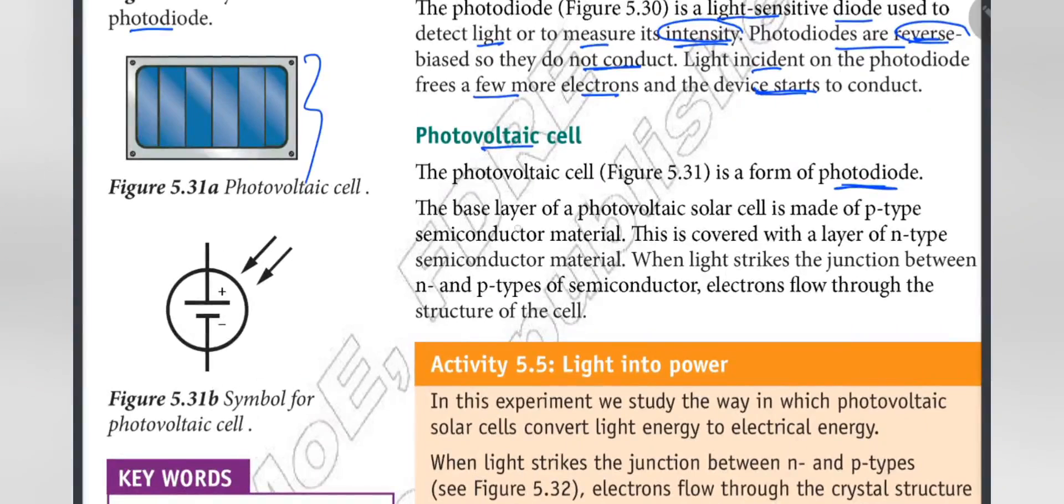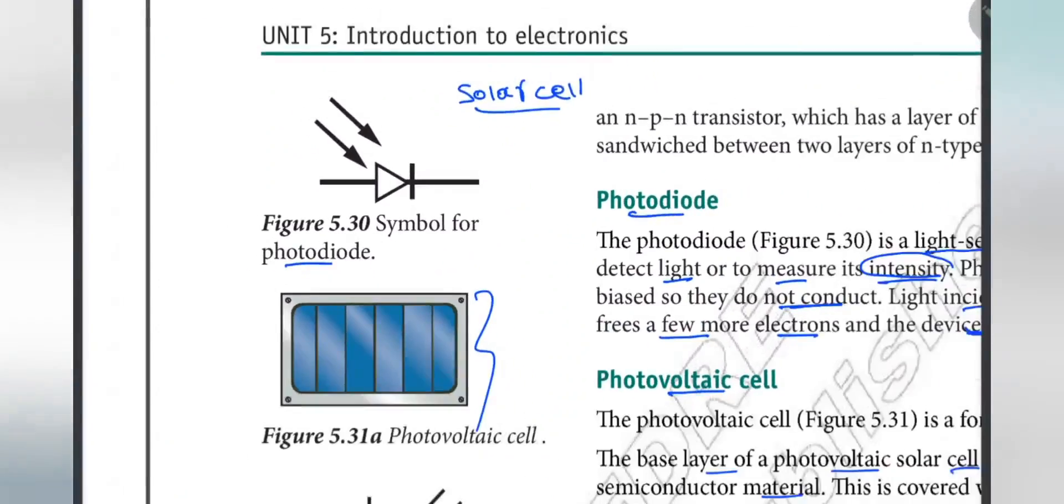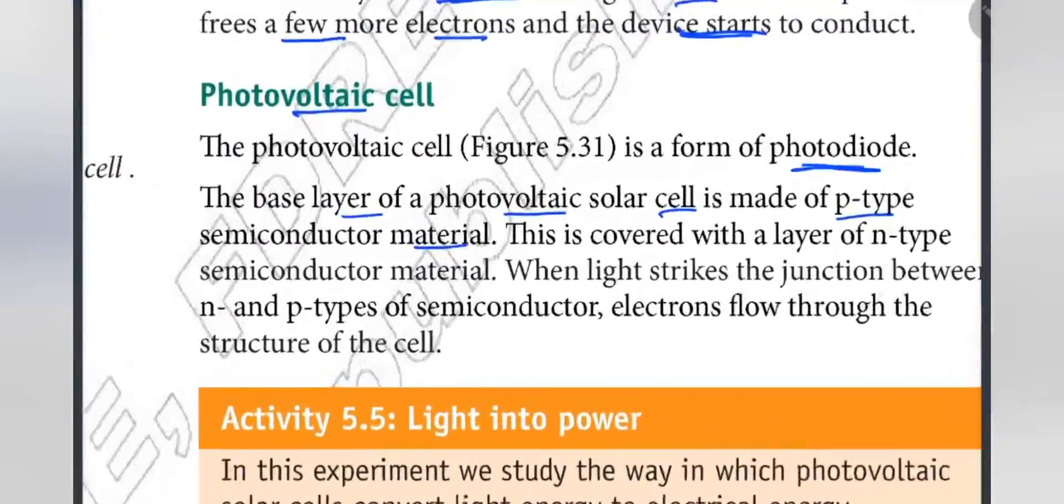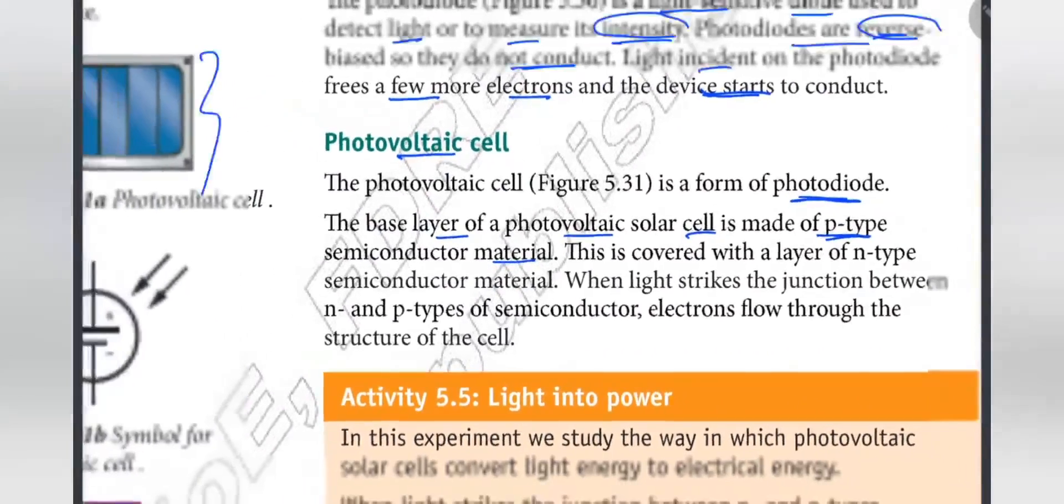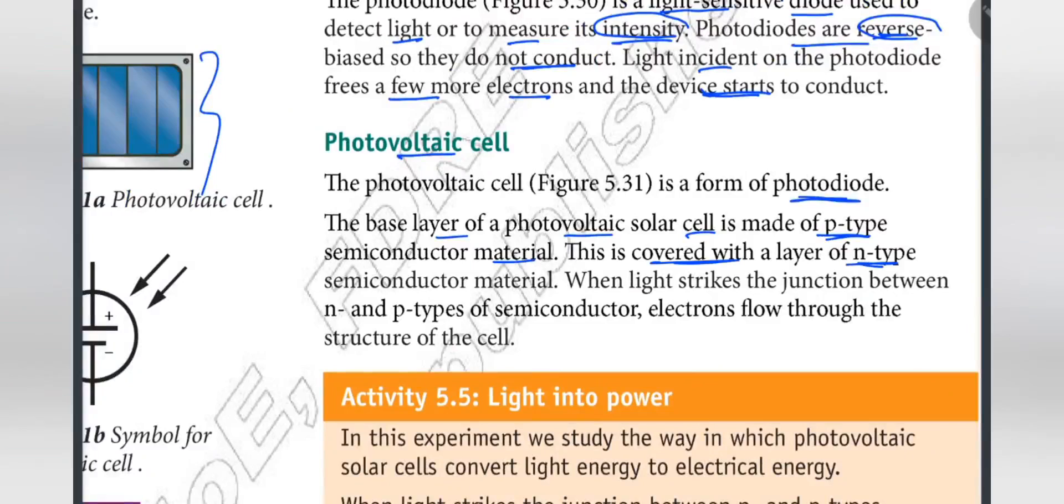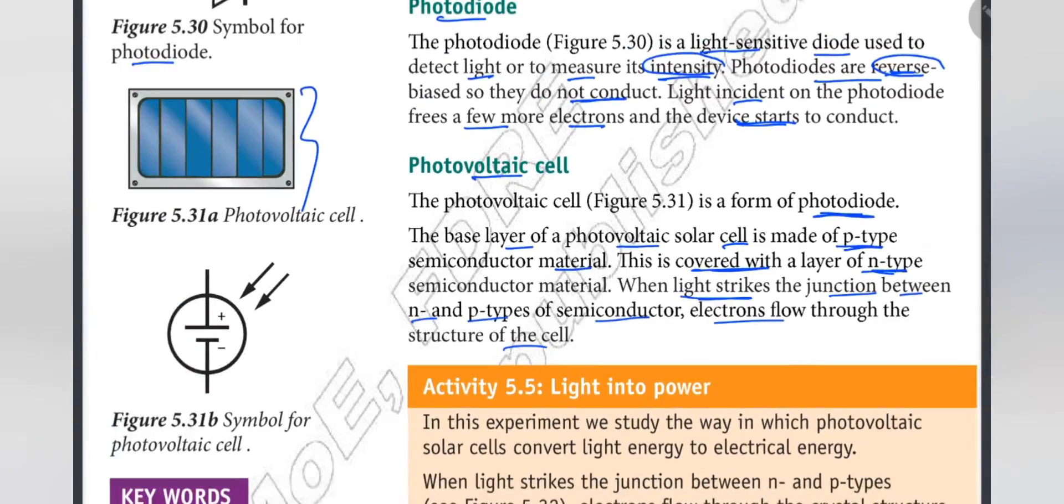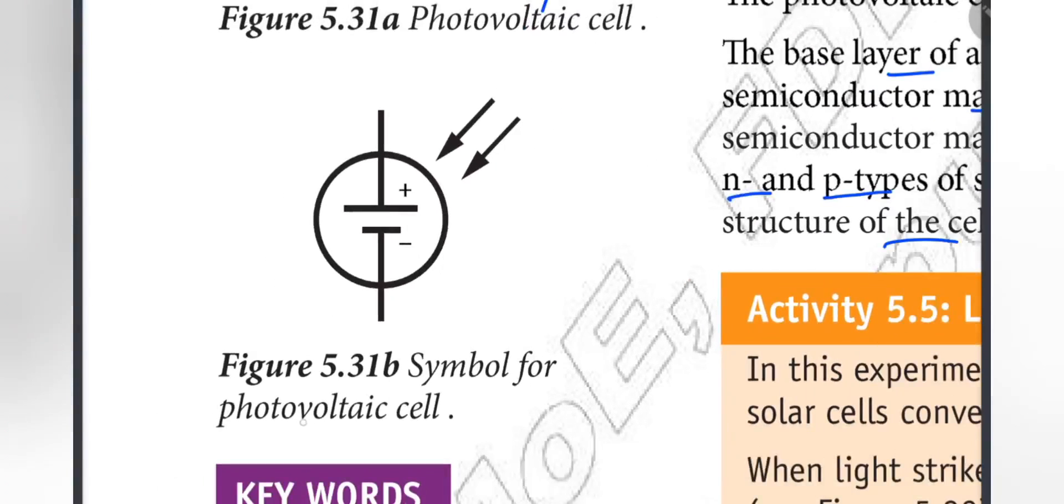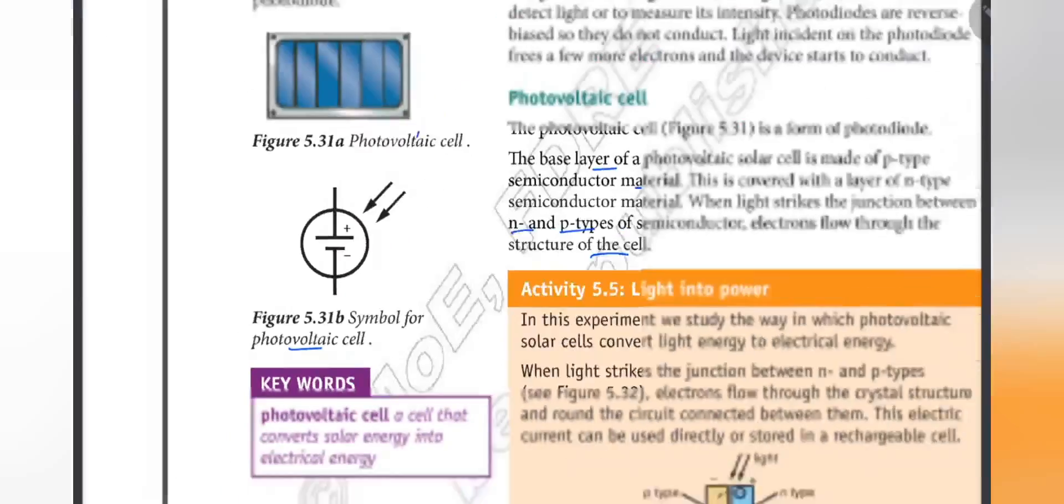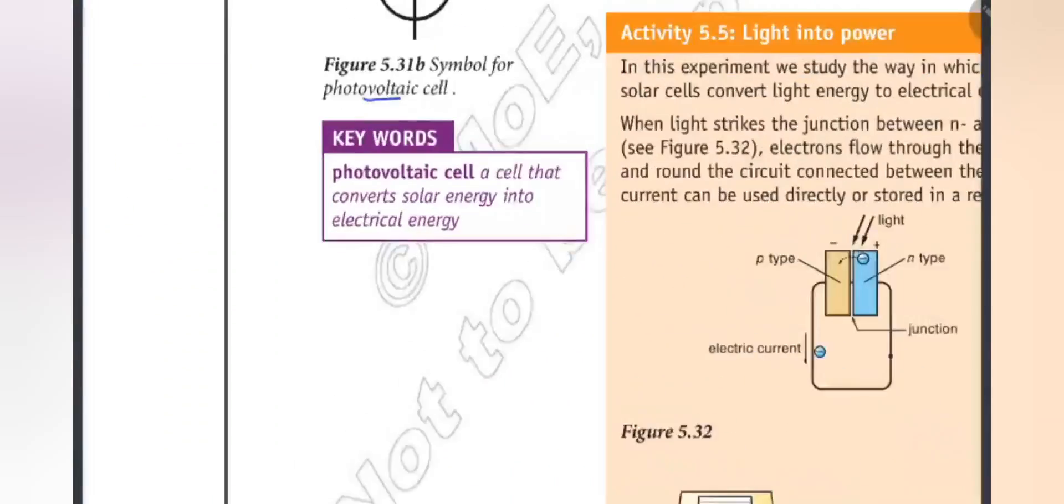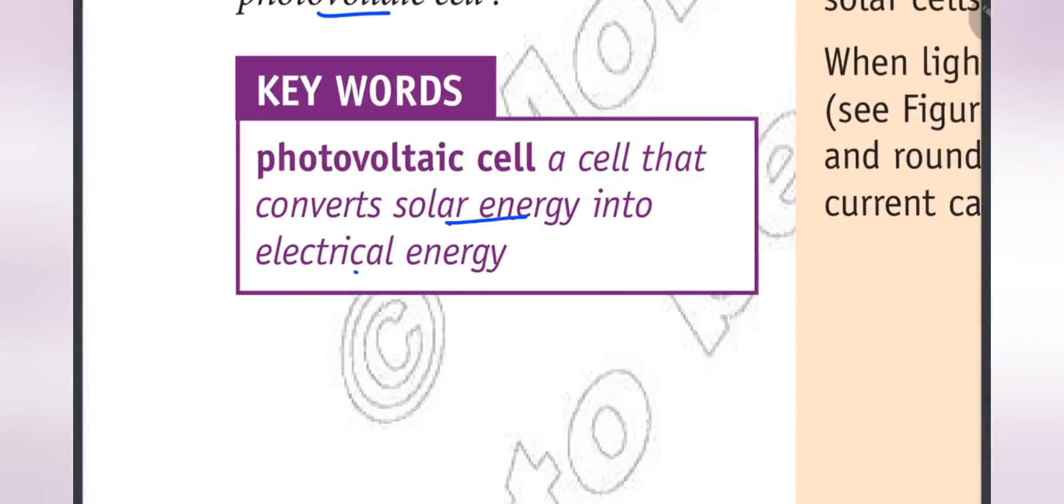The photovoltaic solar cell is made of P-type semiconductor material. The base layer is covered by N-type semiconductor material. When light strikes the junction between N and P types of semiconductor, electrons flow through the structure of the cell. The photovoltaic cell converts light energy into electrical energy. Solar energy becomes electrical energy.